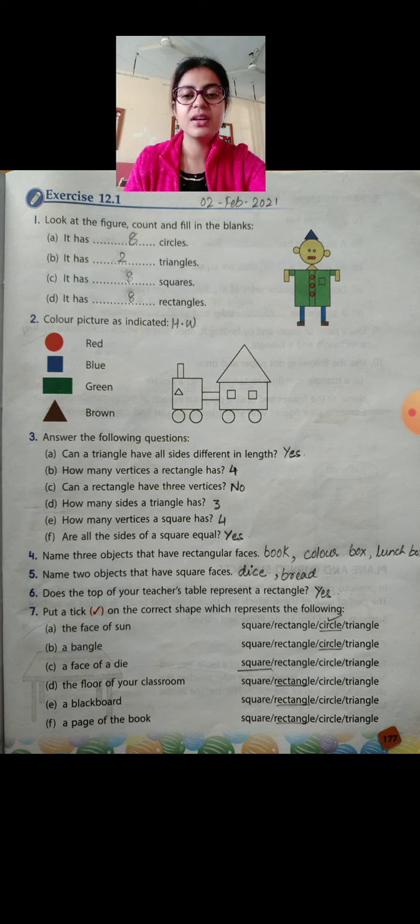Question 3. Answer the following question. Can a triangle have all sides different in length? Yes. Because sides of a triangle may or may not be equal. Triangle ke kabhi sides berabar bhi ho sakte hain aur kabhi uske tino sides alag-alag length ke bhi ho sakte hain.